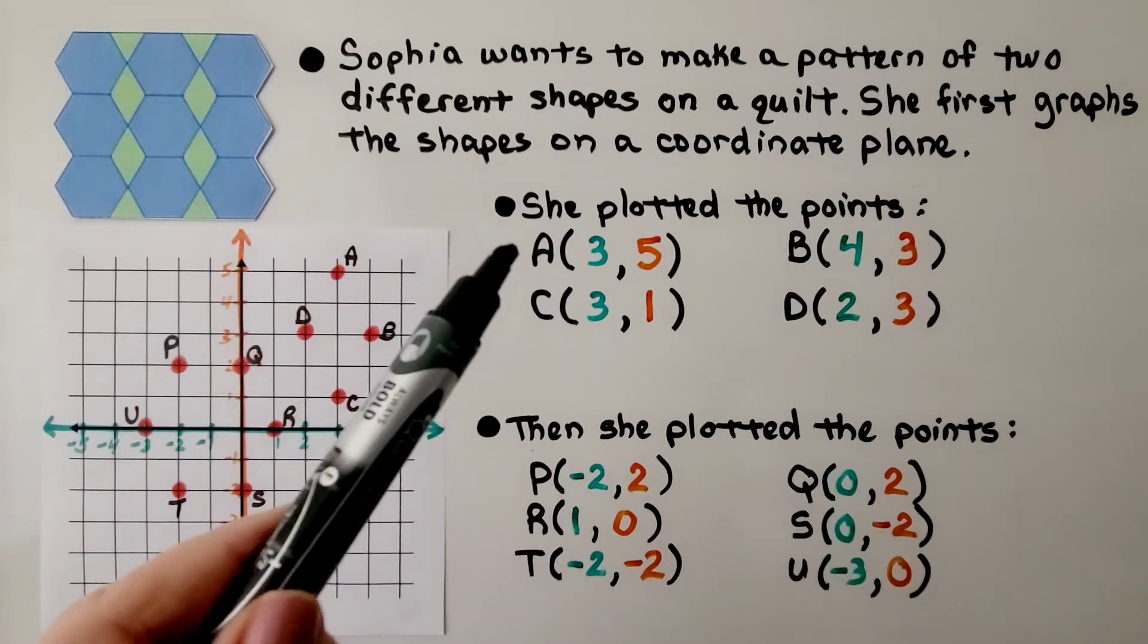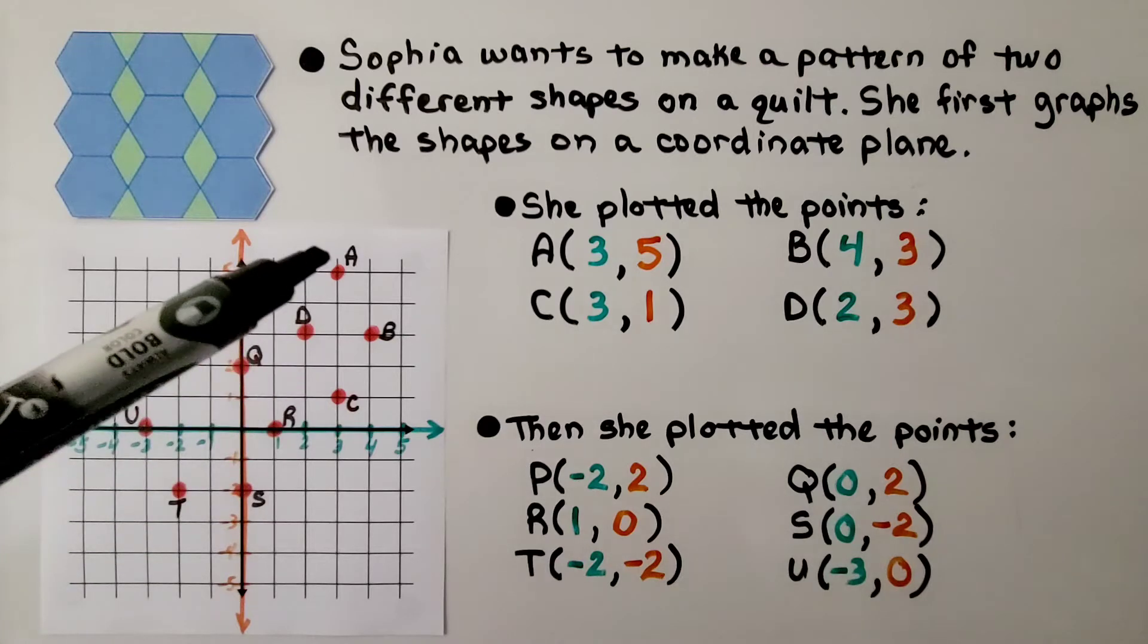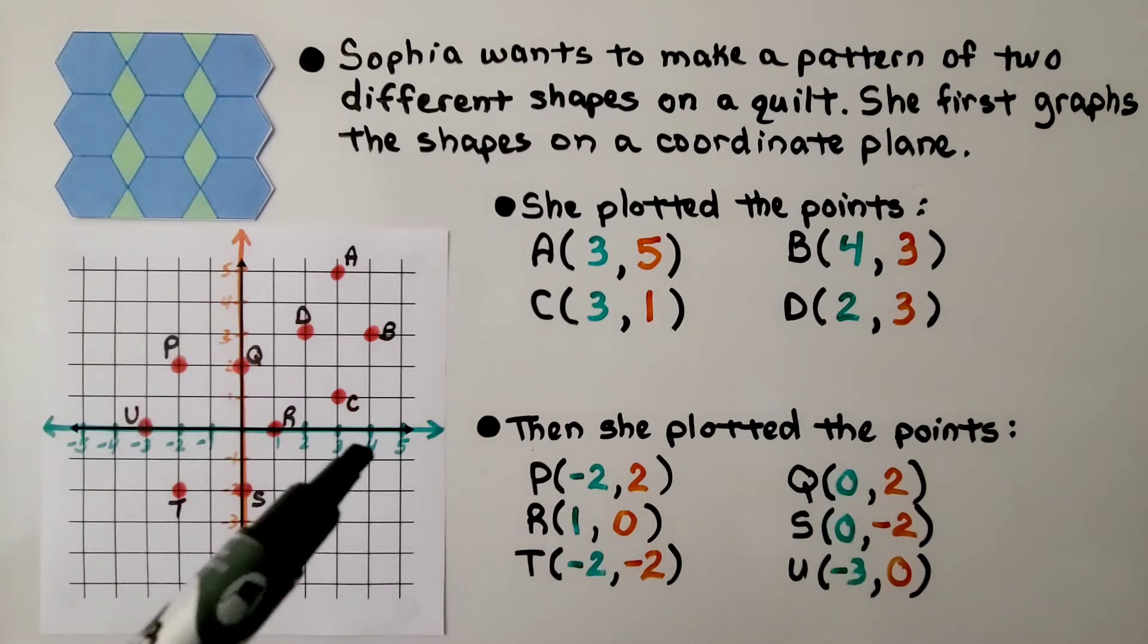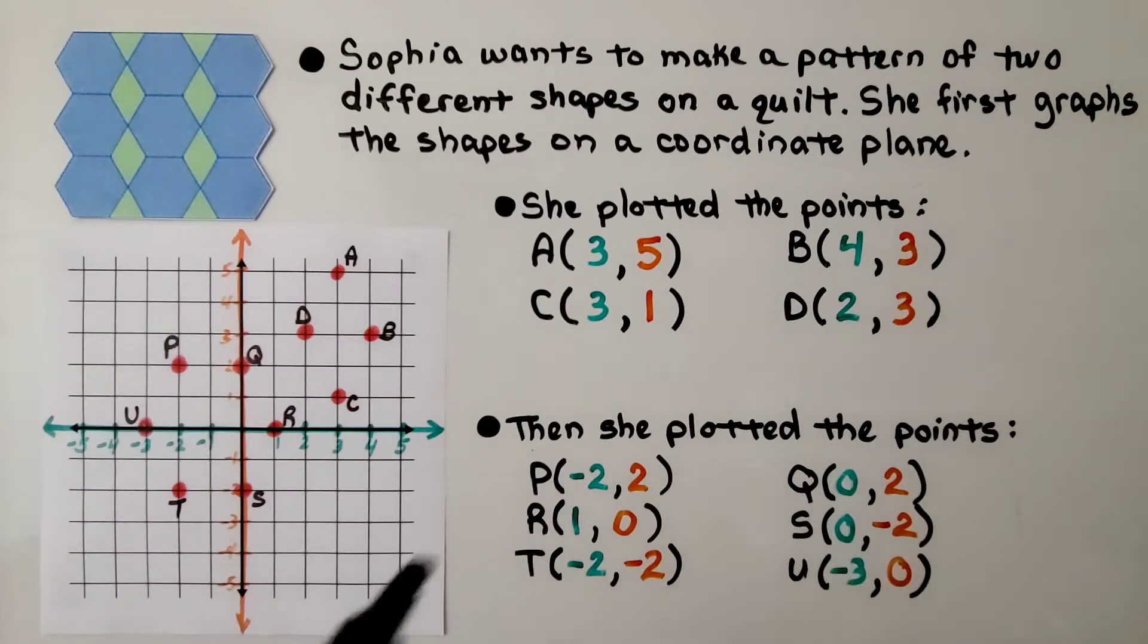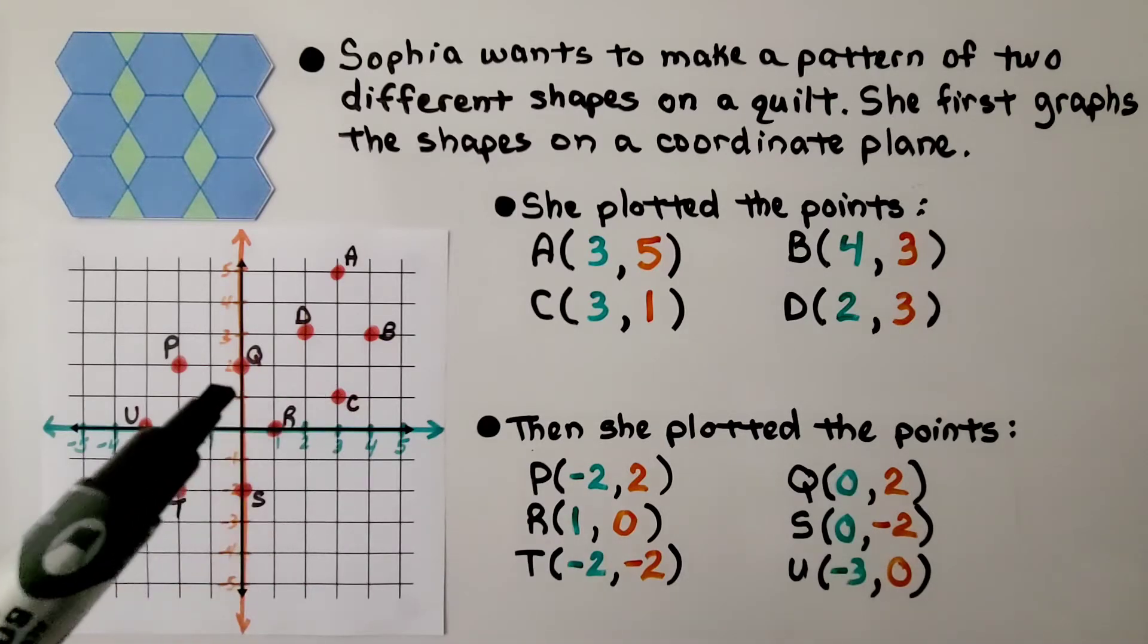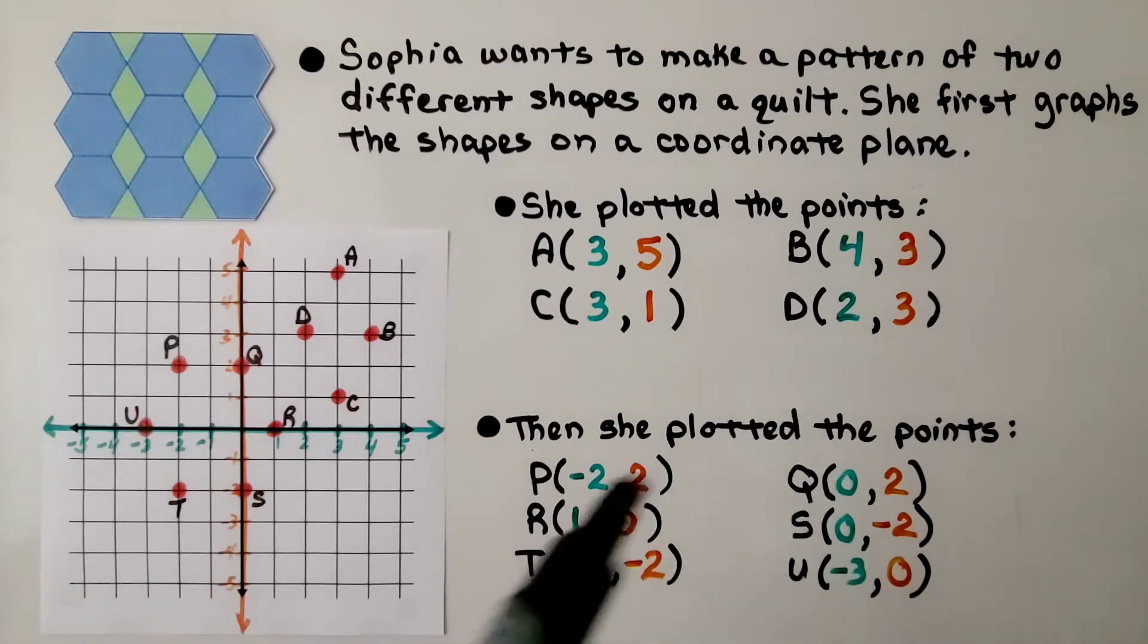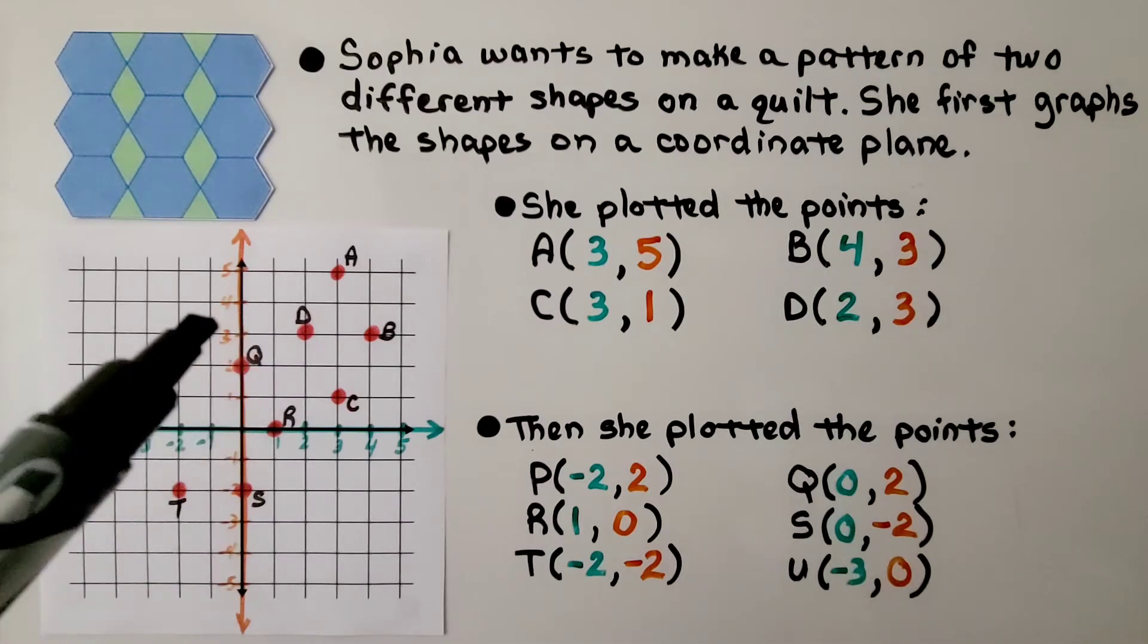She's got points A at 3 for x and 5 for y. For B, it's at 4 for x and 3 for y. For C, it's at 3 for x and 1 for y. And for D, it's at 2 for x and 3 for y.